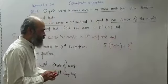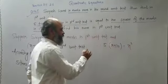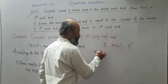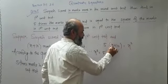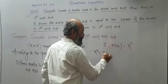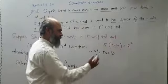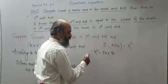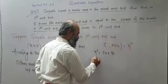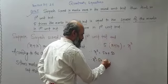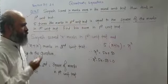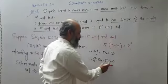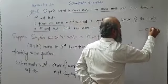Therefore, x squared is equal to 5 times x plus 50, that is 5x plus 50. Now shift the variable and constant to the left hand side, so you get x squared minus 5x minus 50 equals 0.